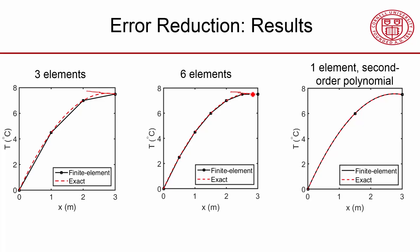And then I'm also showing you the result with a second-order polynomial with just one element. So this is one element with three nodes. And I have a quadratic shape in between, in that element.